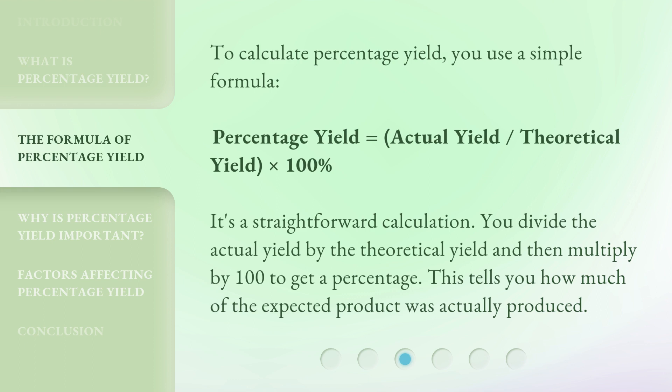To calculate percentage yield, you use a simple formula: Percentage yield equals actual yield divided by theoretical yield times 100%. It's a straightforward calculation.